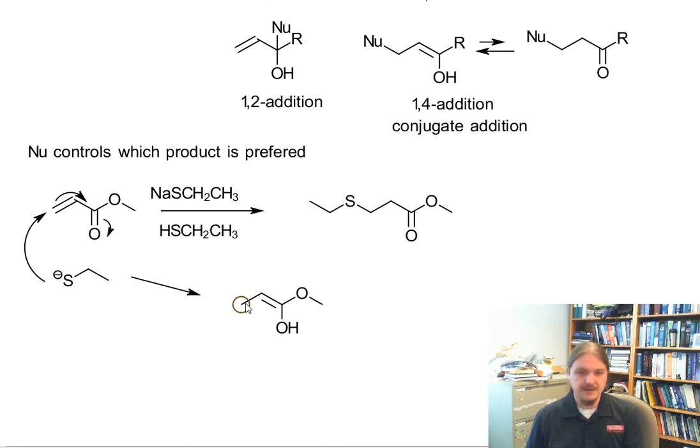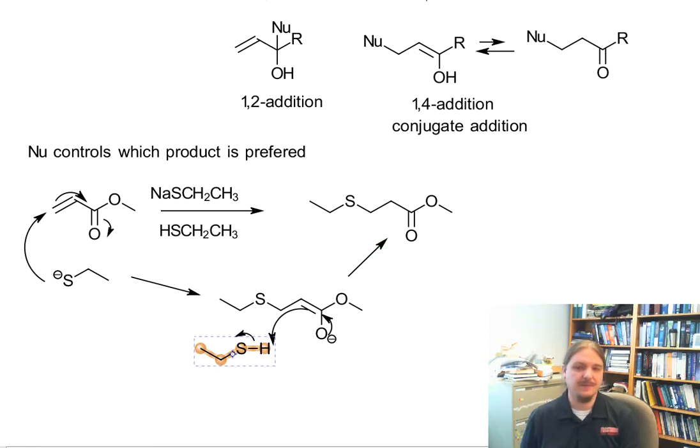That leads to our initial addition product, which is the enolate anion. And then we have our proton source, in this case the thiol. This picks up its proton and reverts to the carbonyl compound.